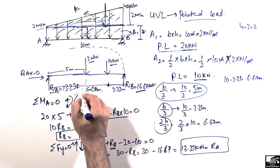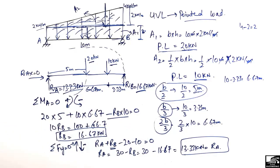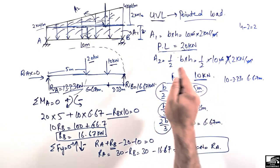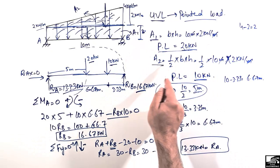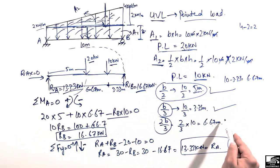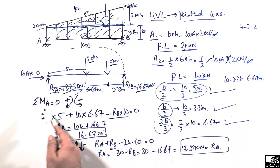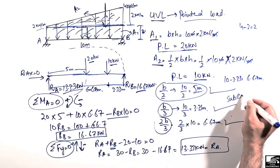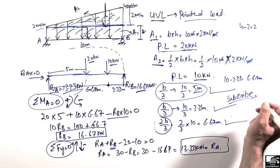So RA = 13.33 kilonewton and RB = 16.67 kilonewton. This is how to find support reactions when there is a trapezoidal or uniformly varying load on a beam: convert the load into point loads for the rectangular and triangular parts, find the centroid of each, then apply the moment equation and vertical force equilibrium. Please subscribe for daily engineering videos, thank you for watching.